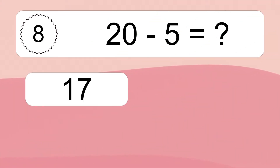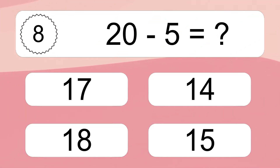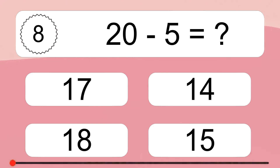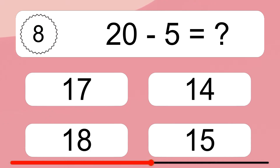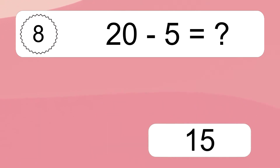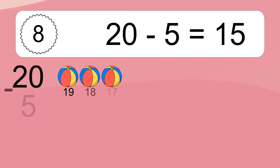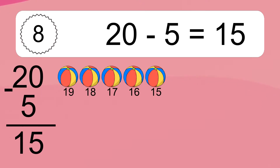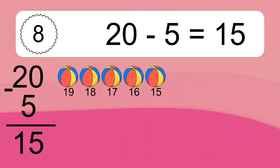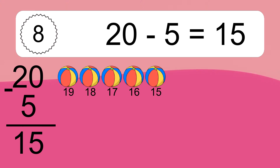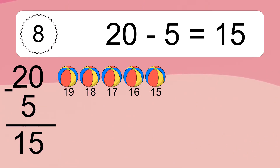20 minus 5 equals what? 20 minus 5 equals 15. Let's count it: 19, 18, 17, 16, 15.